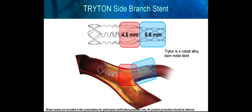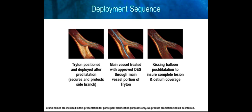The Triton features a transition zone which allows passage of a main vessel drug-eluting stent, thus allowing completion of bifurcation stenting with ease, and a main branch zone which acts as a relatively metal-free scaffold by which the side branch stent can be anchored. Triton is a cobalt alloy bare metal stent. The technique involves positioning and deploying the Triton after pre-dilation and vessel preparation, securing and protecting the side branch. The main vessel is then treated with an approved drug-eluting stent through the main portion of the Triton, followed by kissing balloon post-dilation to complete the bifurcation stenting.